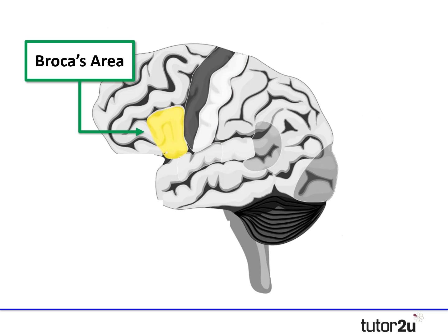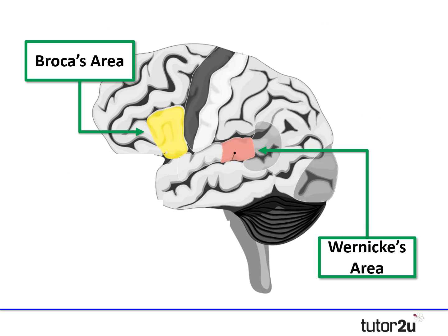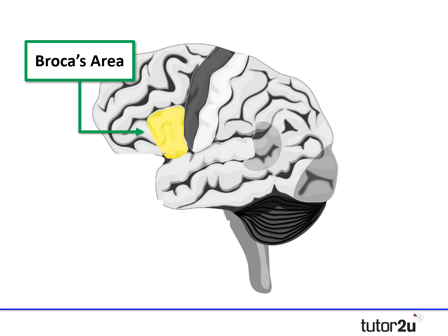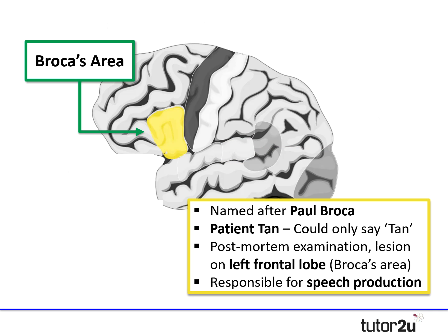On top of those four, there are two other regions — the language centres — that you need to be aware of: Broca's area, highlighted in yellow on screen, and Wernicke's area in pink. Broca's area got its name from Paul Broca, who was working with a patient called Tan — named so because he could only produce that one syllable. When Tan died, Broca performed a post-mortem and found a lesion in the left frontal lobe, concluding this area is responsible for speech production.